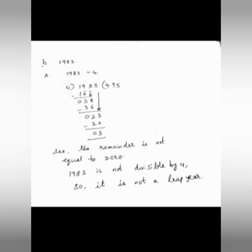4 times 4 is 16. Next, do subtraction. 9 minus 6 is 3, and 1 minus 1 is 0. Then we drop the digit 8, and it becomes 38. 4 times 9 is 36. Then do subtraction. 8 minus 6 is 2, and 3 minus 3 is 0.